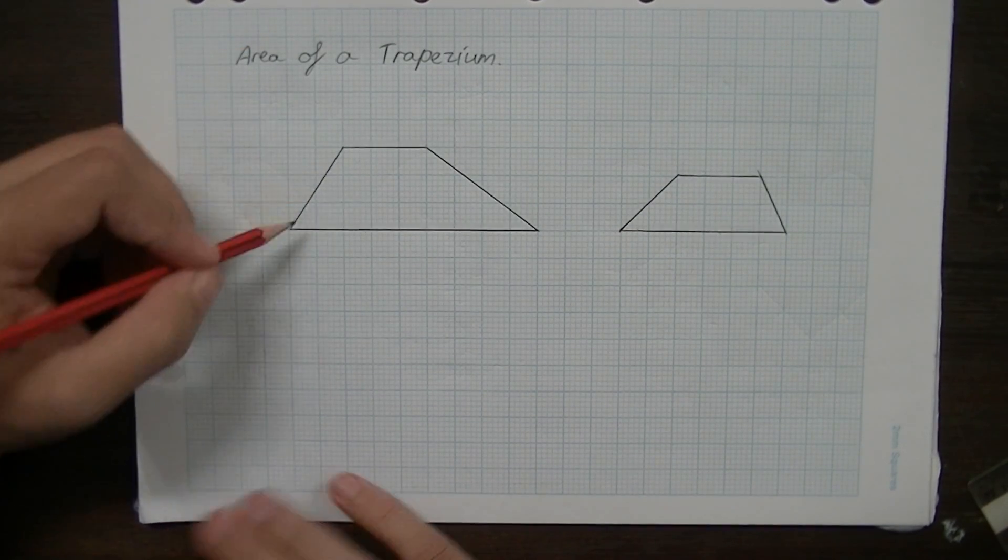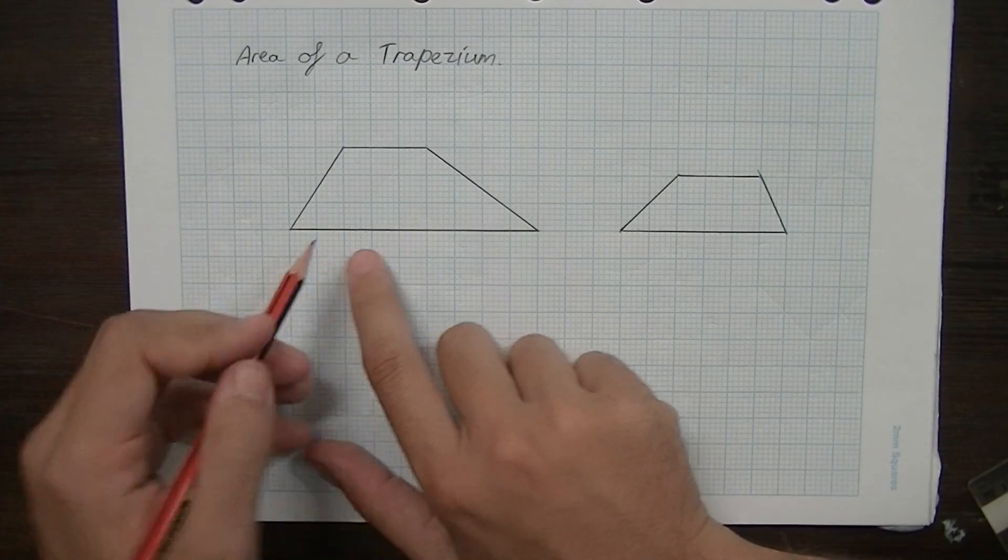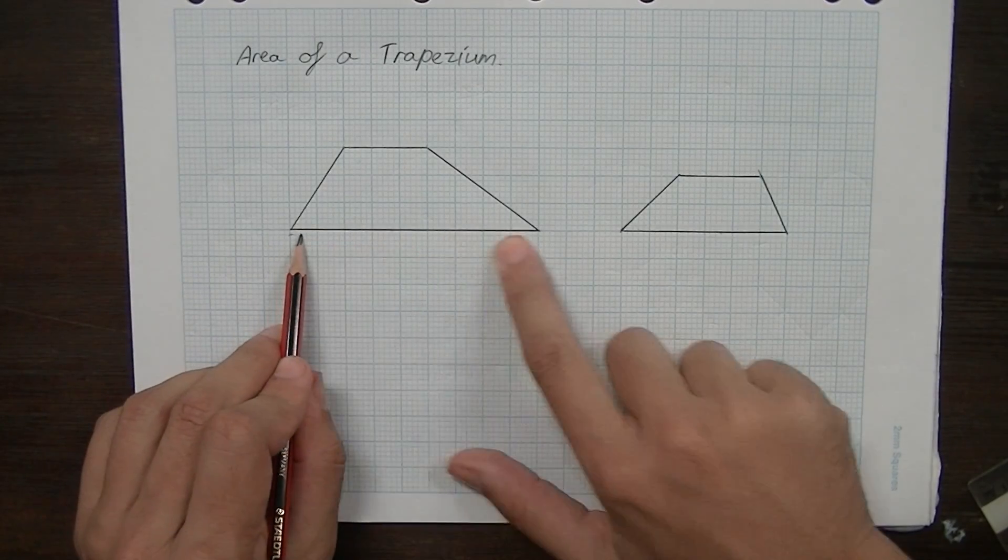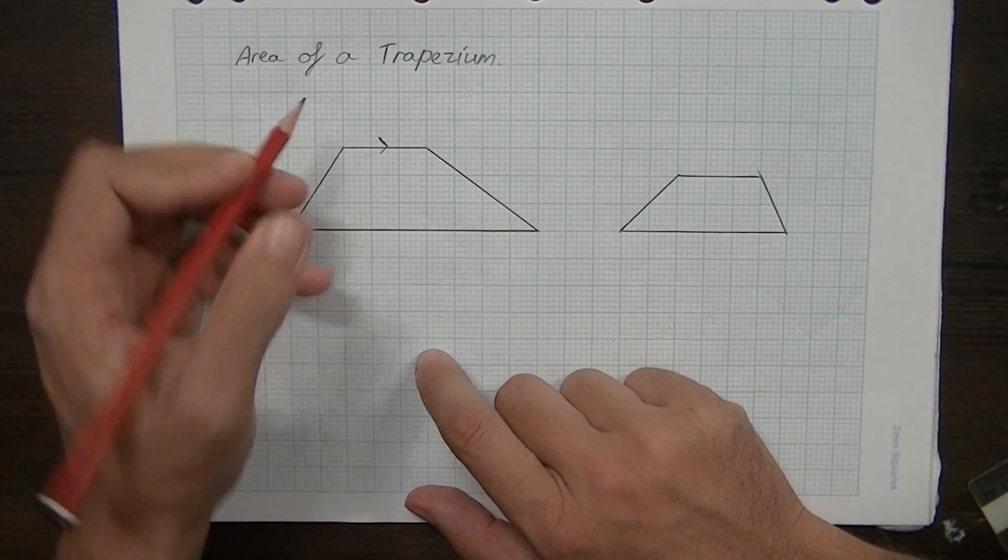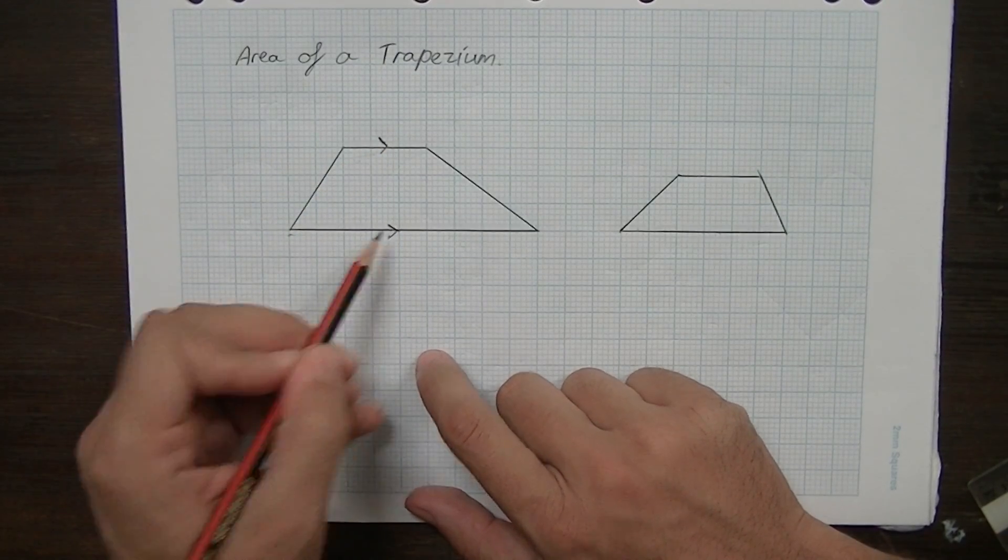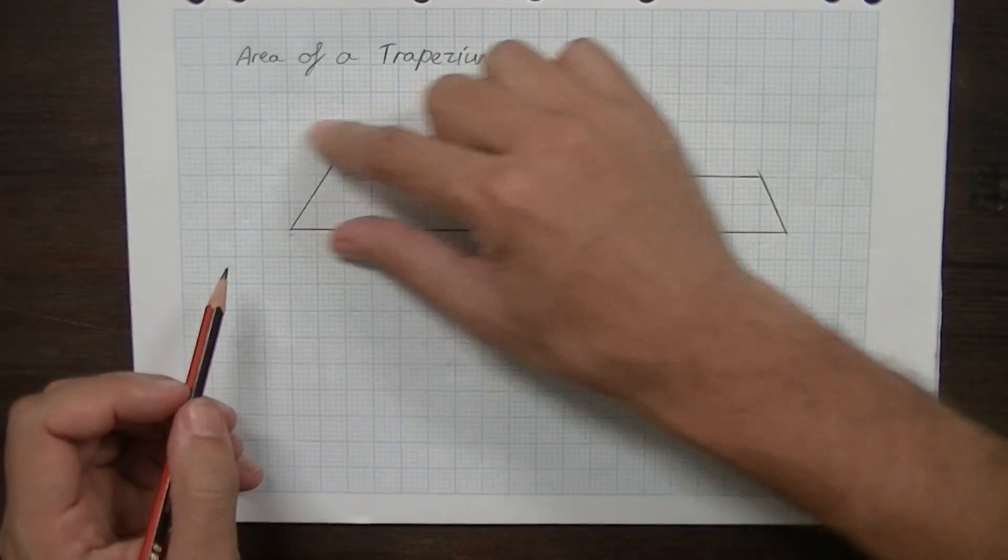Now the area of a trapezium, first of all, what is a trapezium? You'll notice that the base and the top are different lengths, but they're still parallel. They run alongside each other like that.